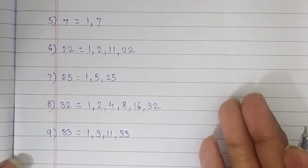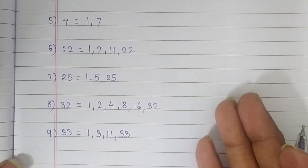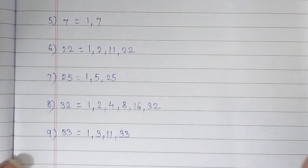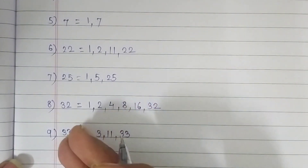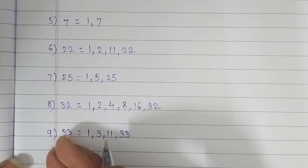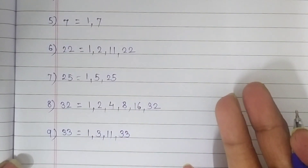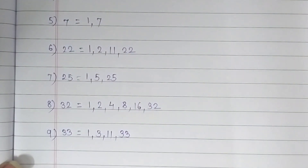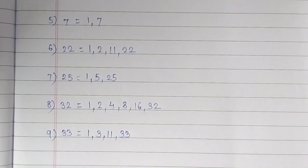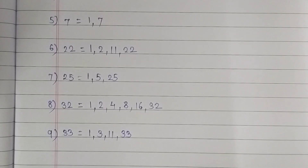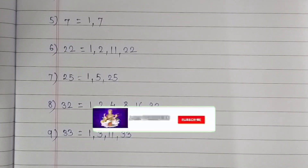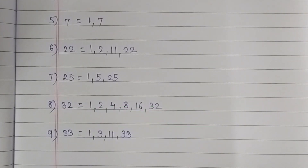It's very easy and simple. We just have to write the tables of the given number in which the given number comes. Hope you understand. Practice it very well, and don't forget to subscribe my channel. Thanks for watching this video. See you in the next video.